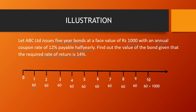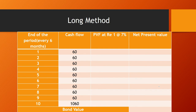On the number line, one period represents six months. So period 1 represents the end of the first six months, period 2 the end of the second six months, period 3 the end of the third six months, and so on. At the end of the 10th six-month period — which is the fifth year — you receive Rs. 60 interest plus Rs. 1000 maturity value. Now let's solve it using the long method.